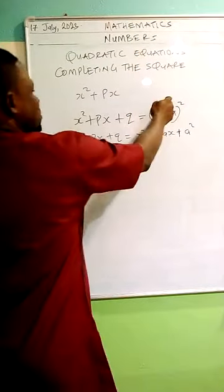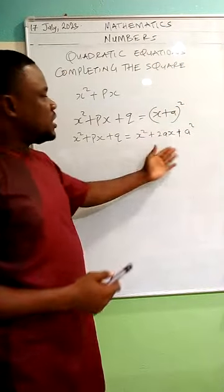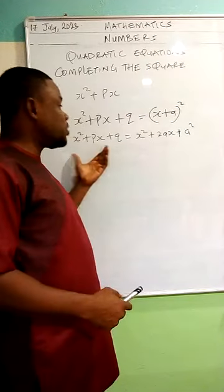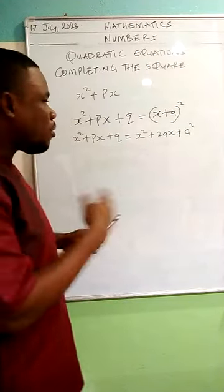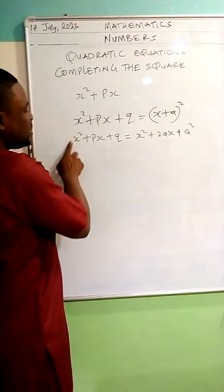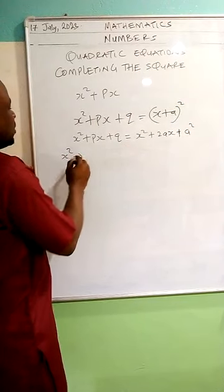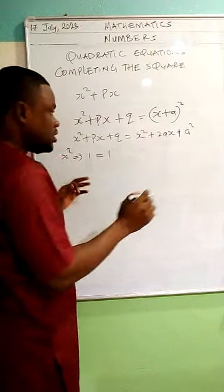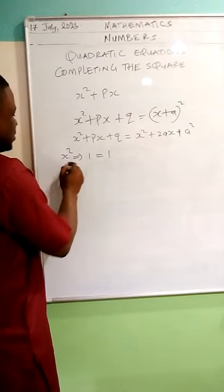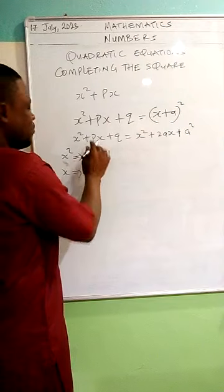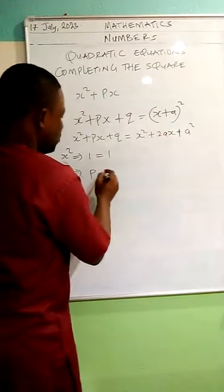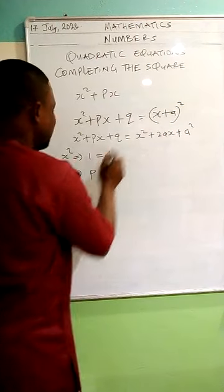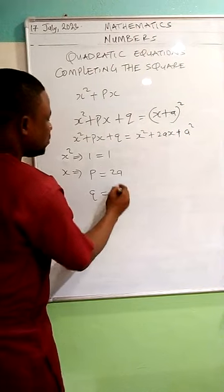So we're seeing that these two expressions are equal. Since this and this are the same product expression in the same order, we can compare coefficients. For x squared, the coefficient is 1 on both sides. For x, I have p on one side and 2a on the other, so p equals 2a. And for the constant value, q equals a squared.